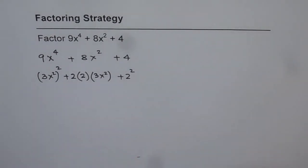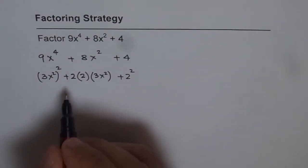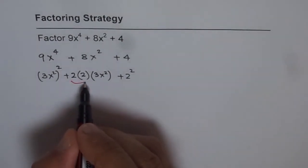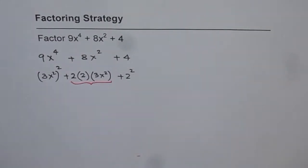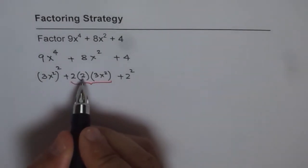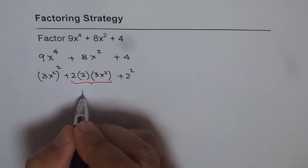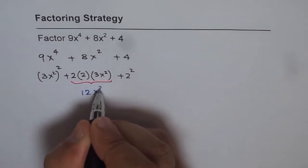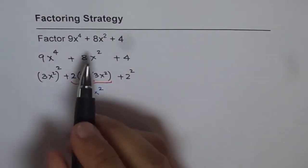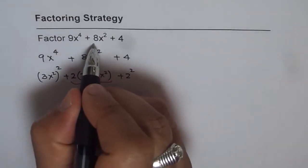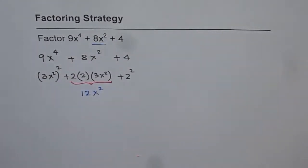Now what is this term equal to? Let us try to figure this out — that is part of the strategy. What we find is that this term is actually equal to 2 times 2, which is 4, and 4 times 3, which is 12. So this term is 12x squared. Now what do we have here? We have 8x squared, not 12x squared.